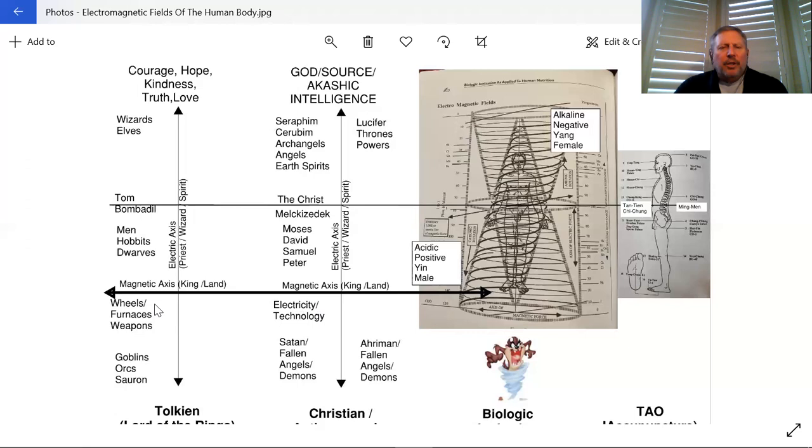Within the Book of the Lord of the Rings, we have that same symbology of the wheels and the furnaces being detrimental to humans. Below that, we have goblins and orcs and Sauron. Orcs are, from what the book says, a mating of goblins and elves to create the orcs. Sauron is a dark lord.